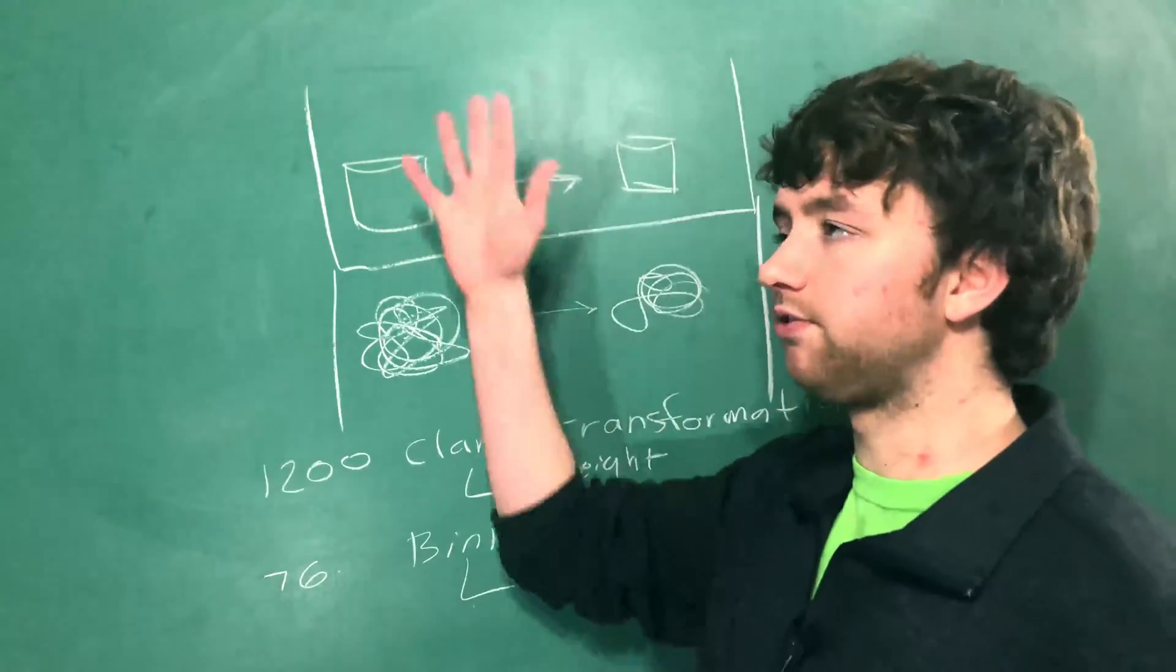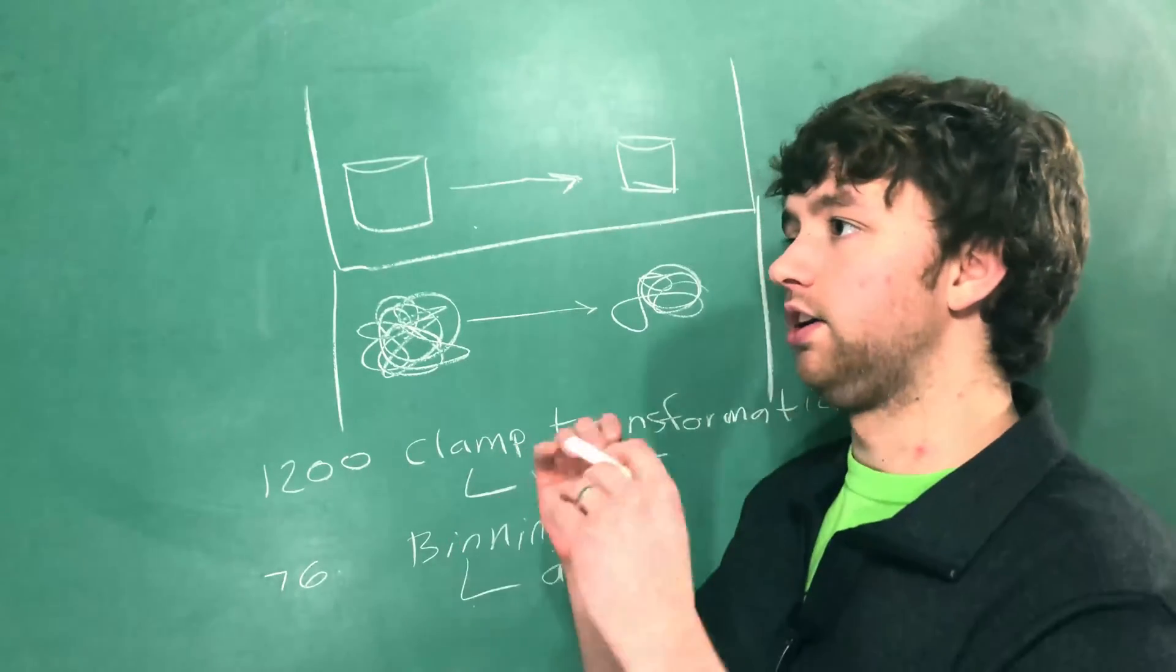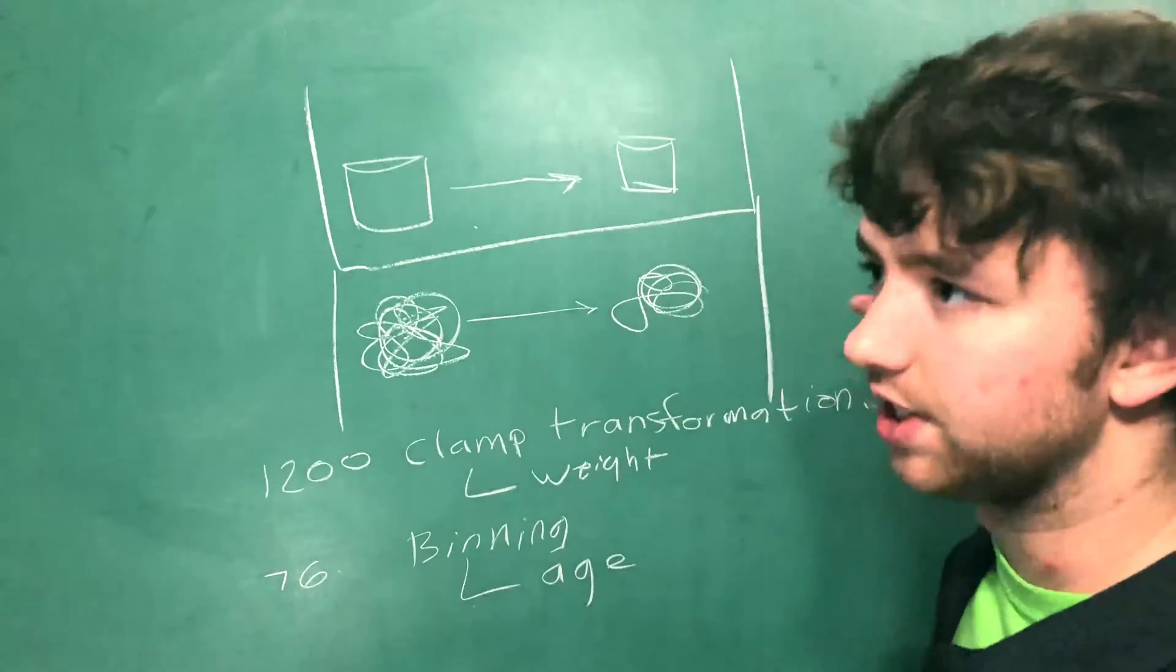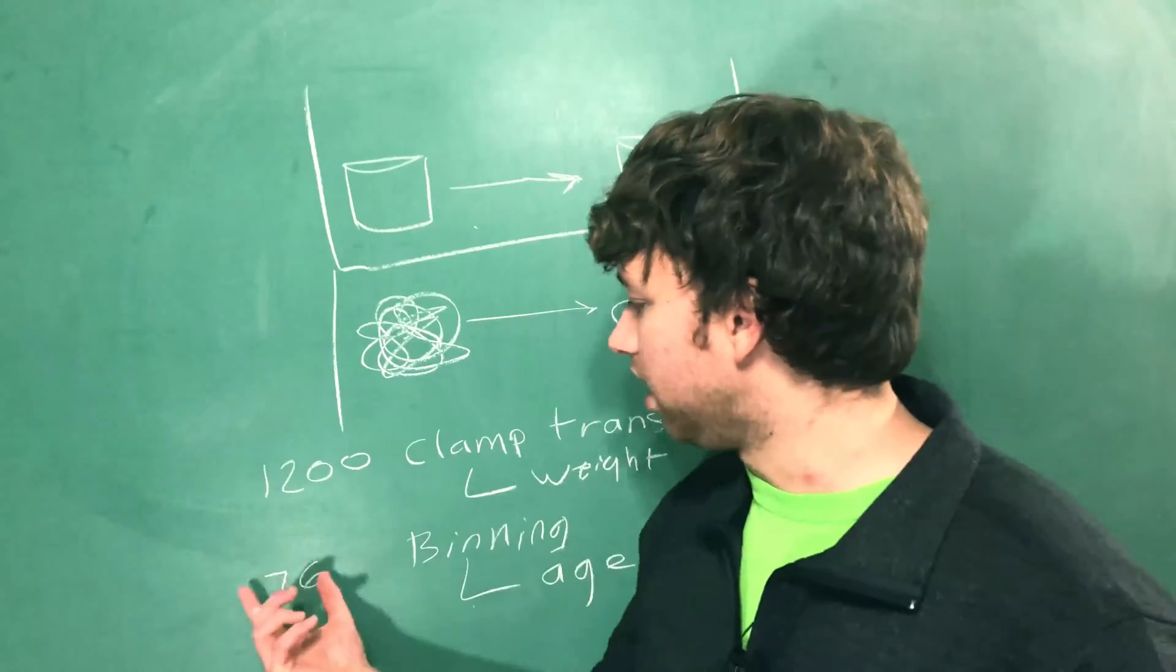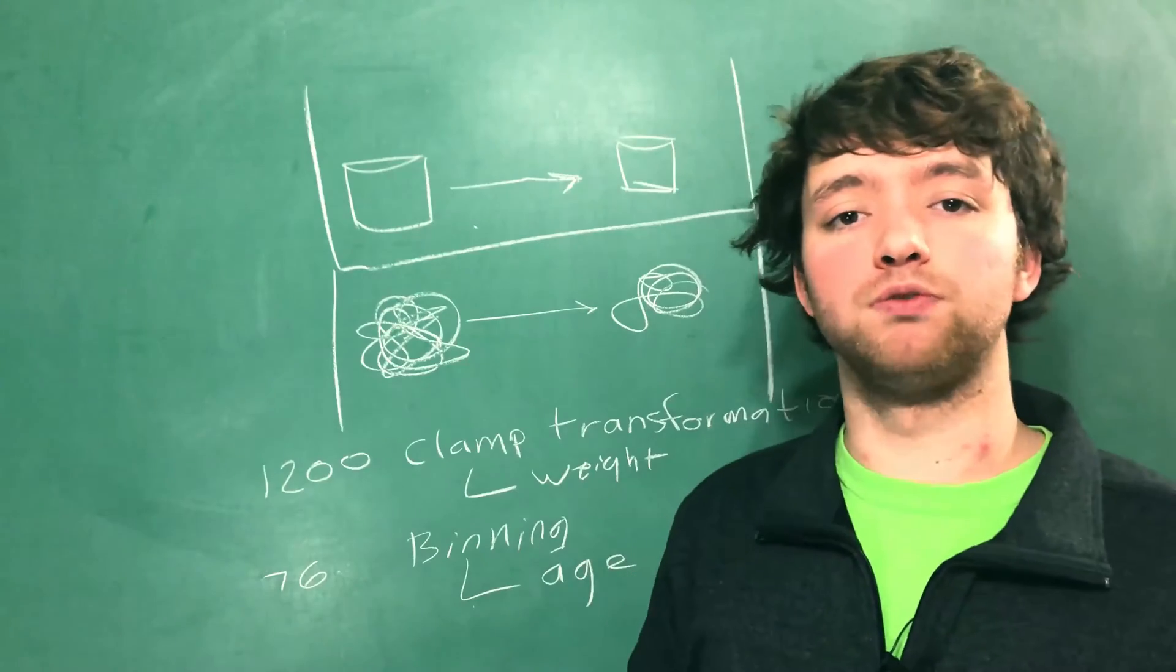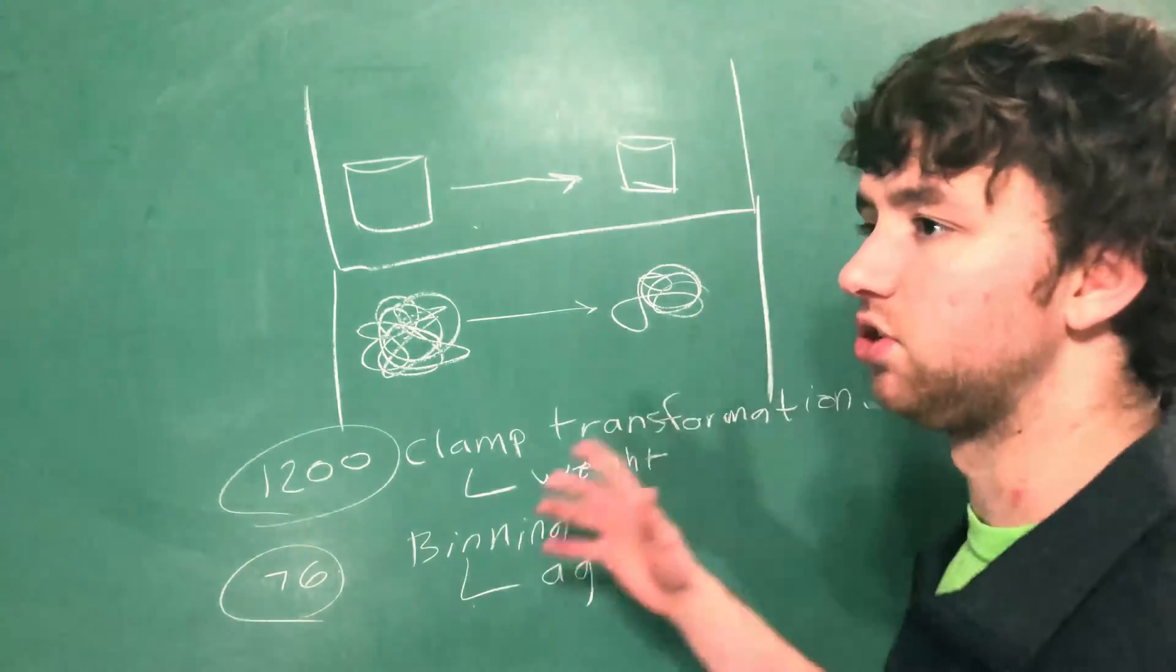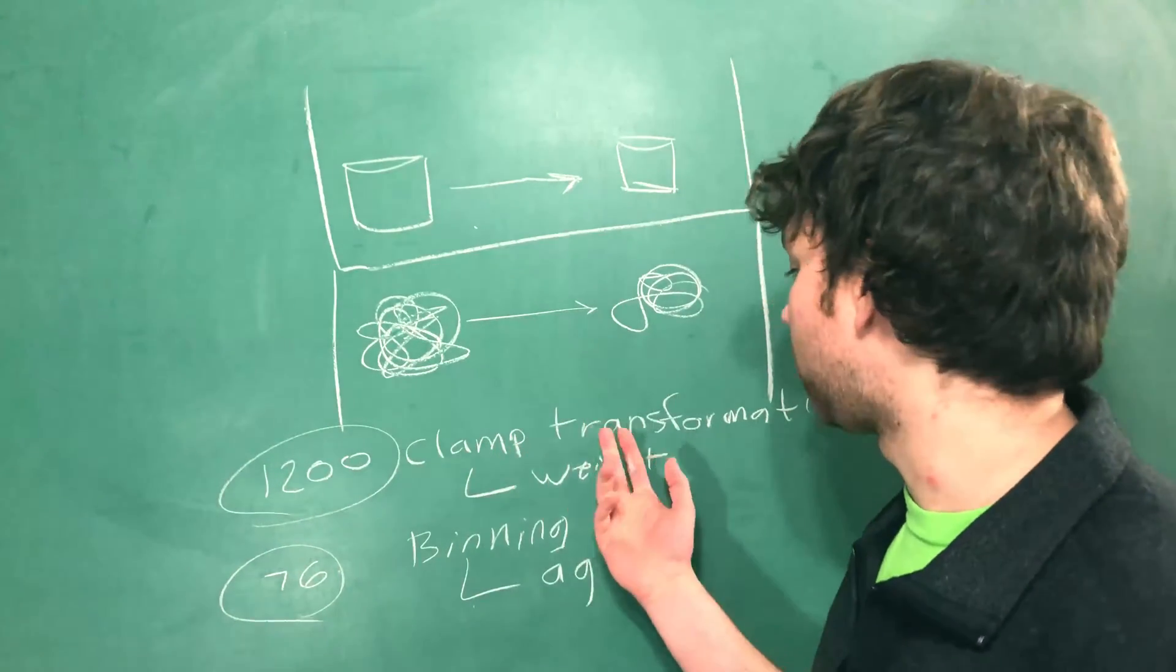...where you say, oh, if you have this descriptive feature value with this descriptive feature value with this descriptive feature value, then you have this target feature value. Well, if the descriptive feature values don't line up with that model, then the model is not going to be useful for the new data that you're using. So we might not be able to do anything with a 76 or a 1,200 because we don't have a model that represents that data. So we have to go through the same transformations on modern new data.